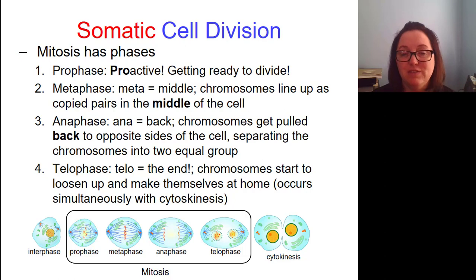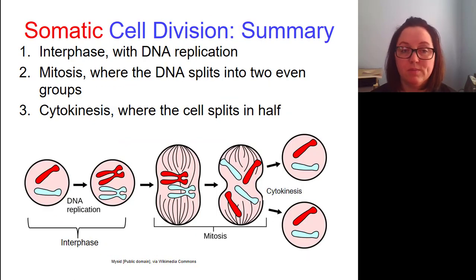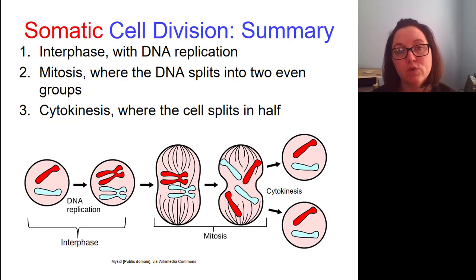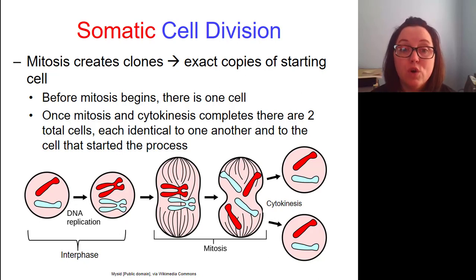Telo means end, so telophase is the end of mitosis where the chromosomes have already been separated into two groups and now they start to loosen up and make themselves at home. During telophase, cytokinesis is occurring too — those two things happen simultaneously. To summarize somatic cell division: we first start with interphase, during which it's really important that the DNA gets replicated. Then the cell goes into mitosis, where the DNA is split into two even groups. Then we have cytokinesis, where the cell is physically split in half. The whole point is to create clones — exact copies of the starting cell. Before mitosis begins there is one cell, and at the end there are two cells, each identical to one another and to the cell that started the process.